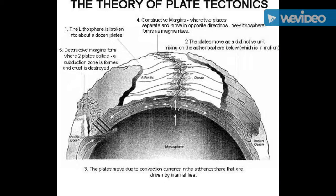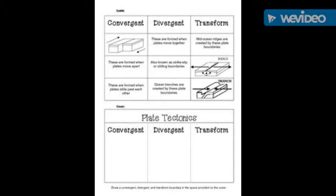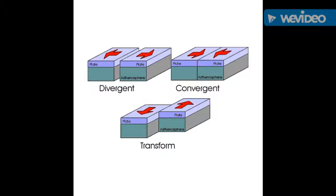This theory was developed over the 1950s through the 1970s. Plate tectonics is a modern version of what they used to call continental drift. This theory was first presented by a scientist named Wegener in 1912.